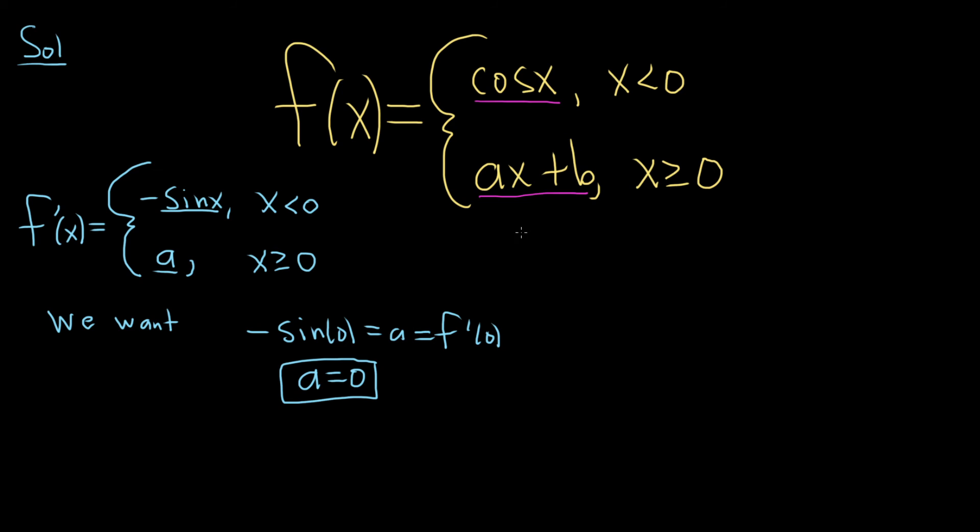For continuity at 0, the limit must exist, which means the one-sided limits must exist and be the same. Taking the limit as x approaches 0 from the left, we use the top piece, cosine x. Since cosine is continuous, we plug in 0 to get cosine of 0, which equals 1.